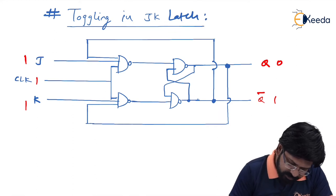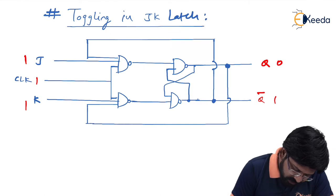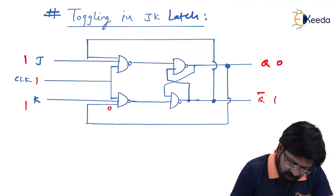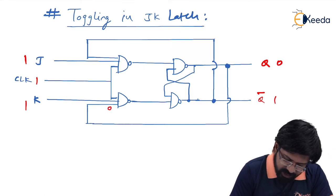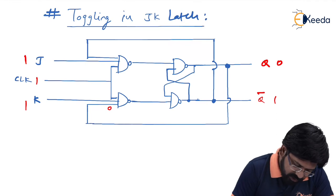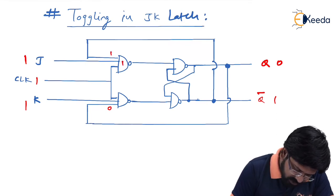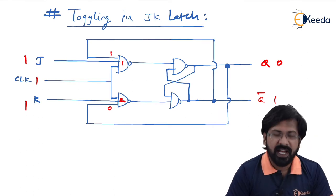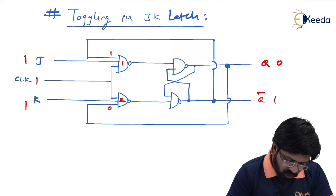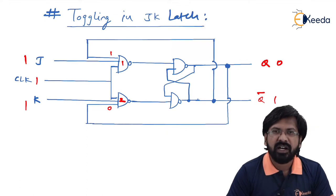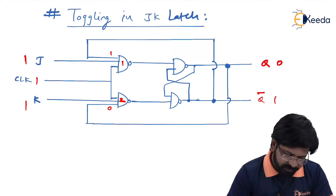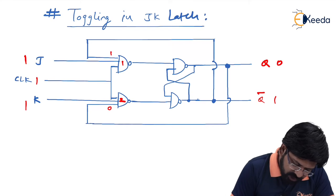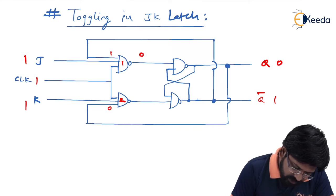Let us see what is going to happen. Since Q=0, 0 is applied here, and since Q_bar=1, 1 is applied here. Let me name those gates as gate number 1 and gate number 2. Now observe gate number 1 — all the inputs of gate number 1 are 1, 1, 1. When all inputs are 1, the NAND gate output is 0.